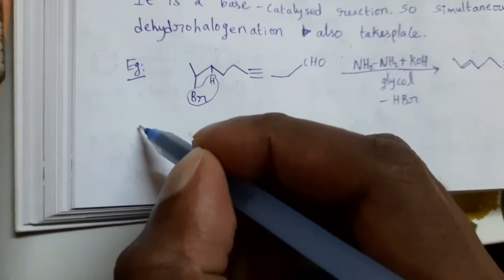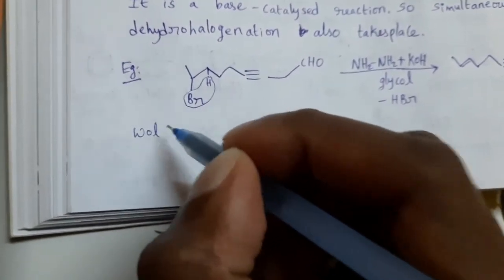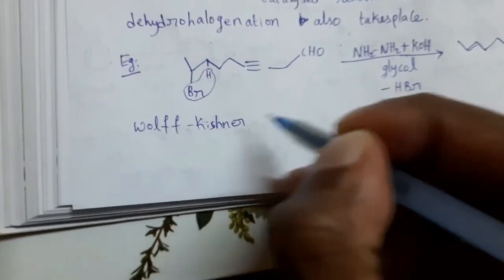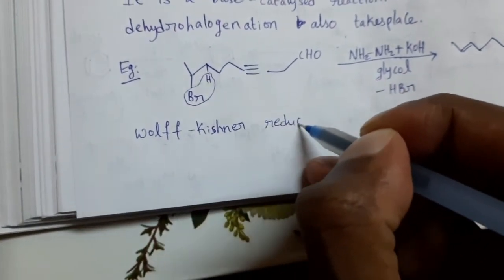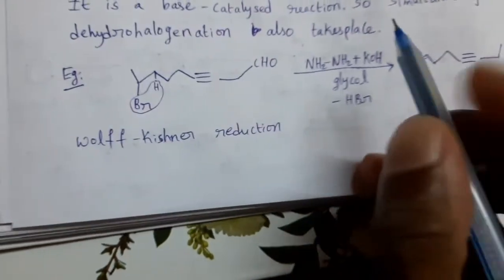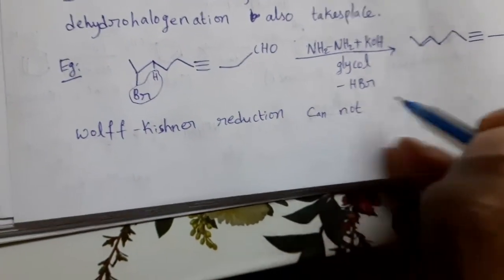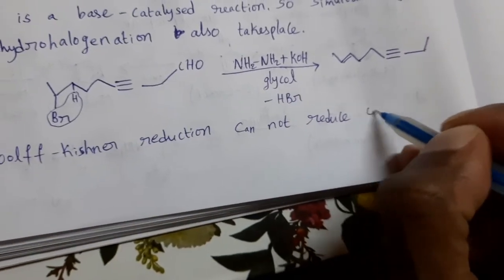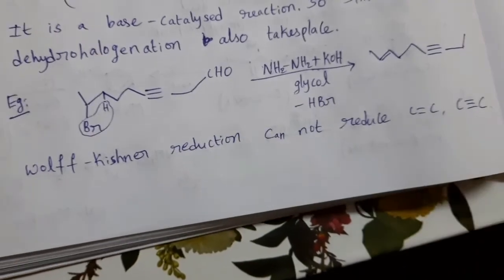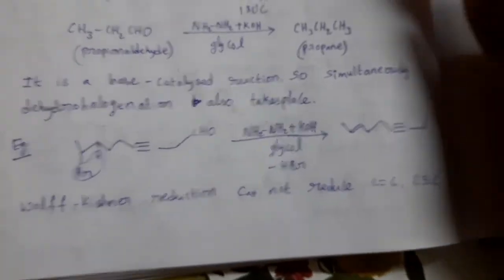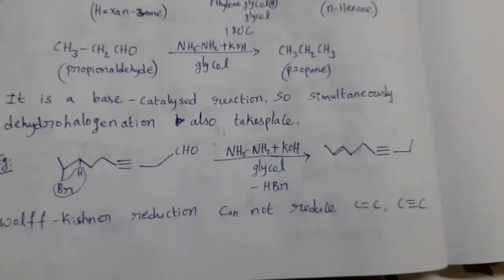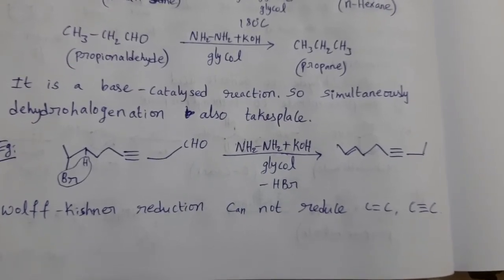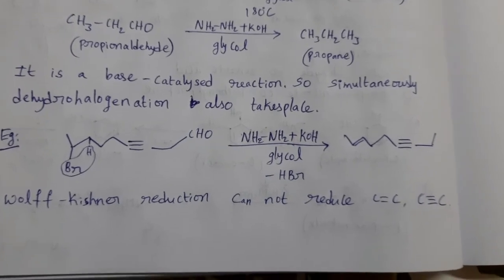So we have to remember this: Wolf-Kishner reduction cannot reduce C=C, C≡C double or triple carbon-carbon bonds. Clemmensen reduction also cannot reduce C=C or C≡C bonds. Wolf-Kishner also has the same type of property.